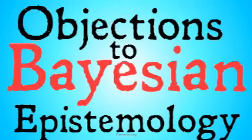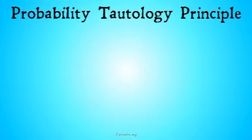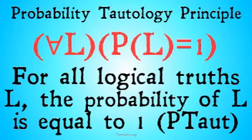Welcome back to Carnades.org. Today we're going to be continuing with our series on objections to Bayesian epistemology as the final part of our larger series on Bayesian epistemology. In this video, we're going to be looking at the problem of the immutability of logic in Bayesian epistemology. The probability tautology principle states that for all laws of logic, the probability of that law of logic has to equal 1 — that is, for all logical truths L, P(L) = 1. We call that P-Hot.